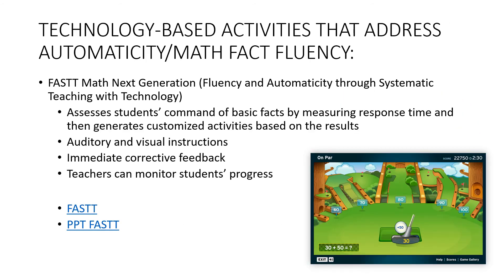Technology-based activities that address automaticity and math fact fluency include FASTT Math Next Generation — Fluency and Automaticity through Systematic Teaching and Technology. It assesses students' command of basic facts by measuring response time, then generates customized activities based on results. It provides auditory and visual instructions, immediate corrective feedback, and allows teachers to monitor student progress through statistics. Please pause this lecture and explore the FASTT website link provided, then return to continue the lesson.